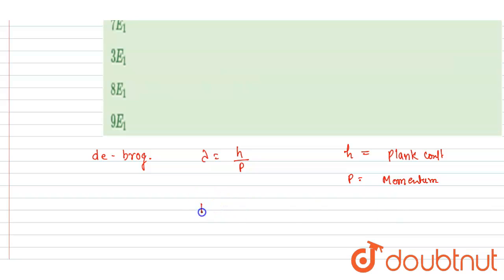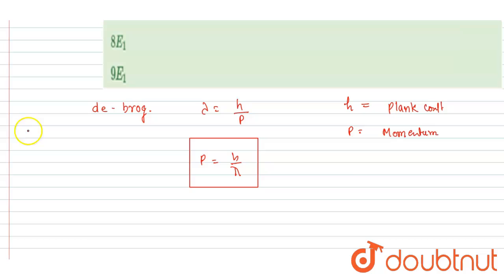So we can write down this momentum equals h by λ. So as we got this momentum, we can write down the kinetic energy. We know that kinetic energy equals momentum squared by 2 times of mass.